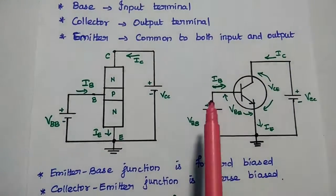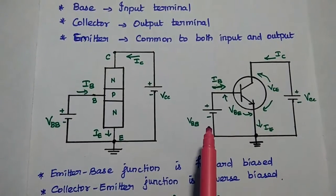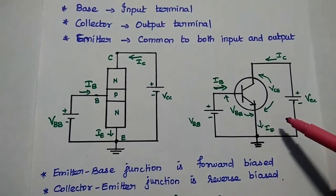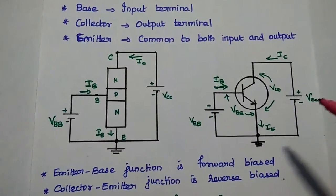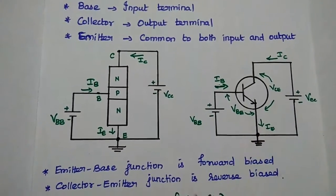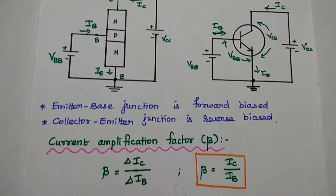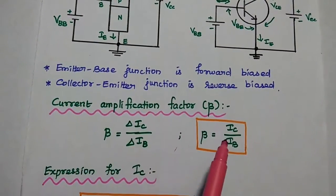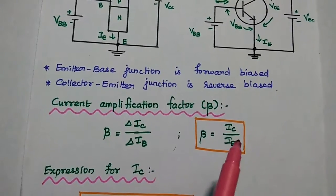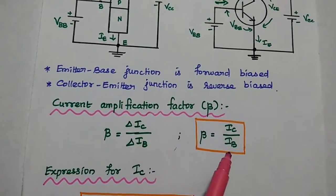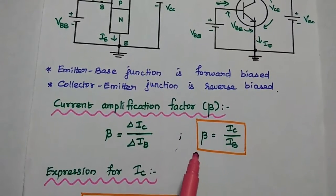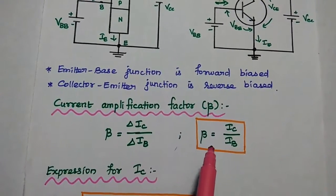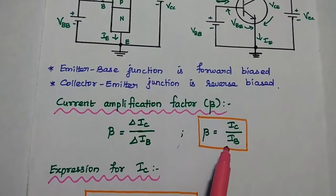That means the base emitter junction is forward biased and collector emitter is reverse biased, to get maximum current conduction in the transistor. Next, current amplification factor — amplification factor means it is the ratio of output current to input current. Here, the output current is collector current and input current is the base current. The current amplification factor for CE configuration is represented as beta, which is equal to IC divided by IB.